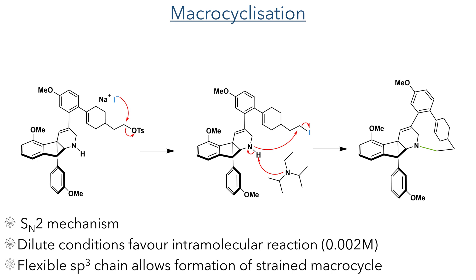With both the amine and the tosylate installed, the authors could then carry out the key macrocyclisation reaction. The addition of sodium iodide was essential for success: sodium iodide acts as a nucleophilic catalyst, first displacing the tosylate group to generate an alkyl iodide. Nucleophilic attack of the secondary amine on this alkyl iodide generates the target macrocycle via an SN2 mechanism. This reaction was carried out under dilute conditions, which favours the intramolecular reaction to form a macrocycle rather than an intermolecular reaction to form a dimer.